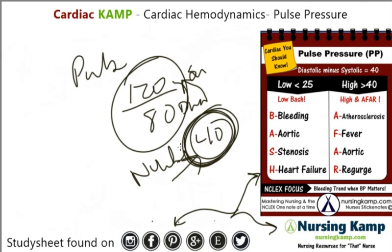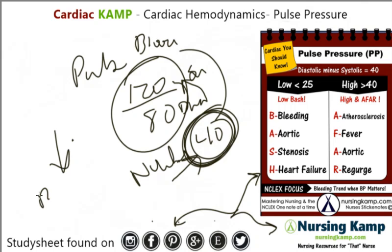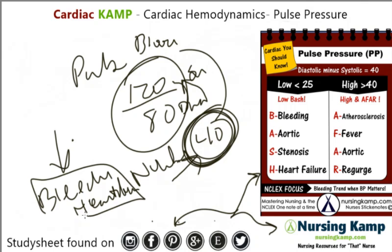Normal pulse pressures are usually around 40, and a decrease in pulse pressure is usually the result of bleeding or heart failure. Basically, bleeding or heart failure will give you a decreased pulse pressure — less than 40.